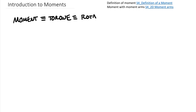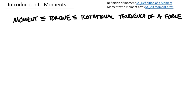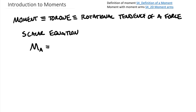A moment is the rotational tendency of a force, so it is not a force itself. It turns out that moment and torque, and forces, have different units. As we look at a scalar equation for a moment, we find that a moment — we tend to use the letter M — we always take a moment about a point. A moment will always have a subscript, so this is going to be about point A, and that equals some force times d-perpendicular.